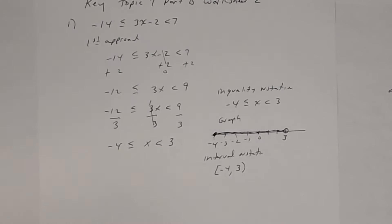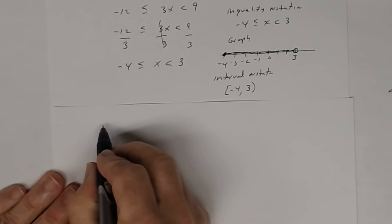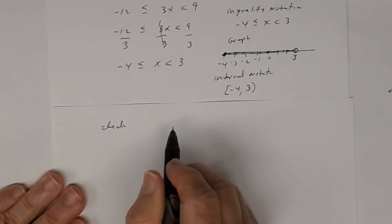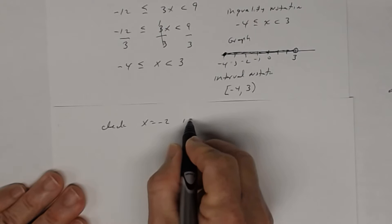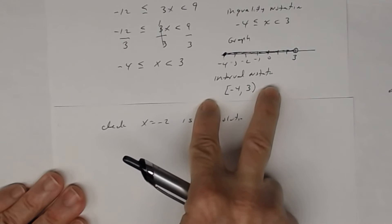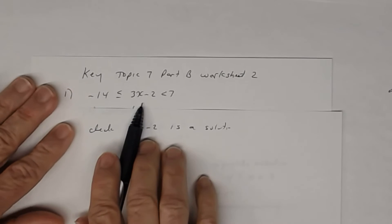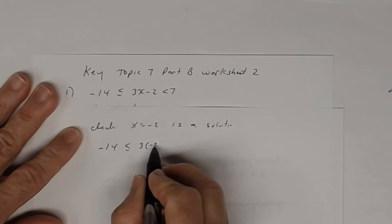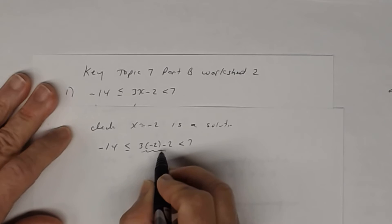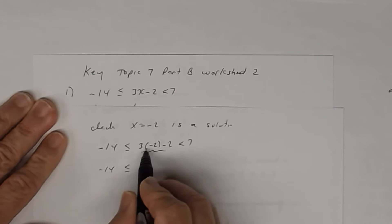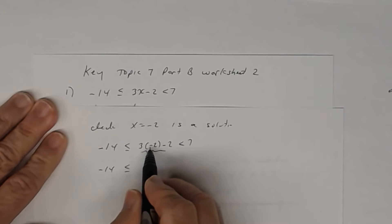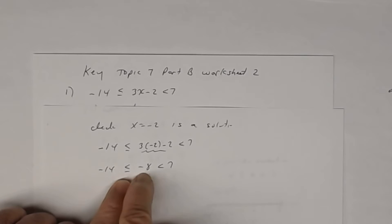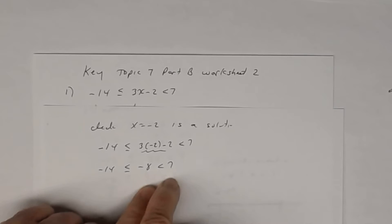You can check by picking a number in the interval. Let's use negative 2. Substituting x = negative 2 into the original: negative 14 ≤ 3(−2) − 2 < 7. The middle simplifies to negative 6 minus 2, which is negative 8. Is negative 14 ≤ negative 8? Yes. Is negative 8 < 7? Yes. So that's true — x = −2 is a solution.